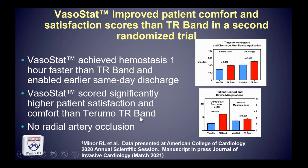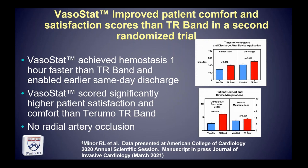Hand perfusion was higher with the VasoStat than the other device and there was no radial artery occlusion. That trial was published earlier this year. In a second randomized trial it was fully an hour faster to hemostasis with the VasoStat, in patients undergoing same-day discharge — translating into significant time savings in people going home. Patient satisfaction scores were higher with the more comfortable ergonomic device, nurses loved it due to fewer device manipulations, and there were no instances of radial artery occlusion.